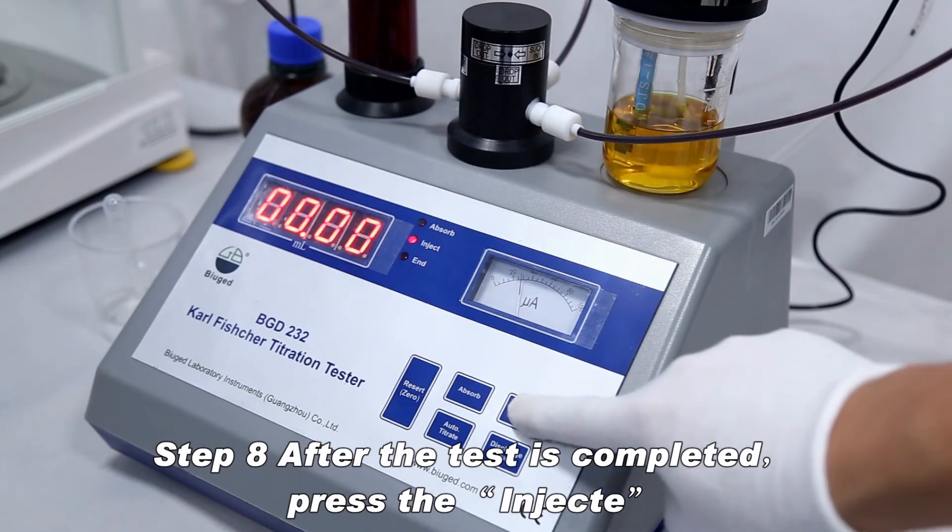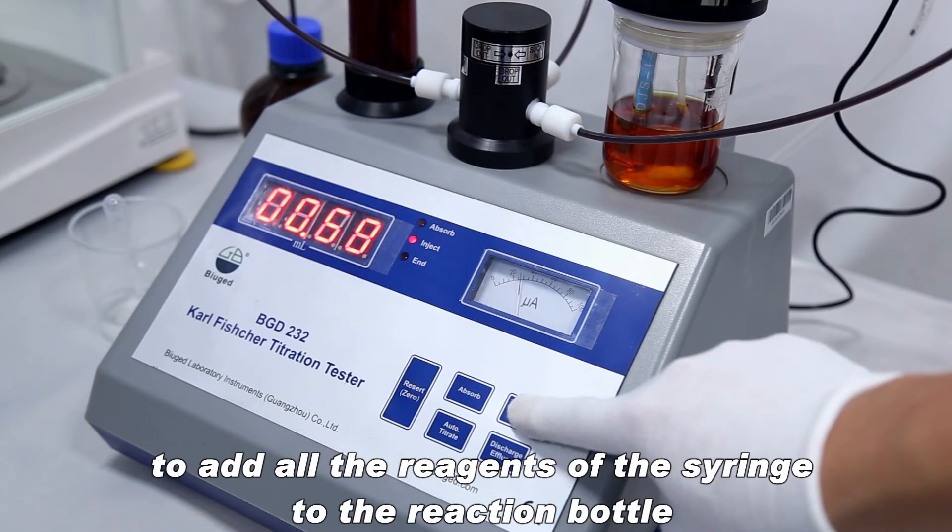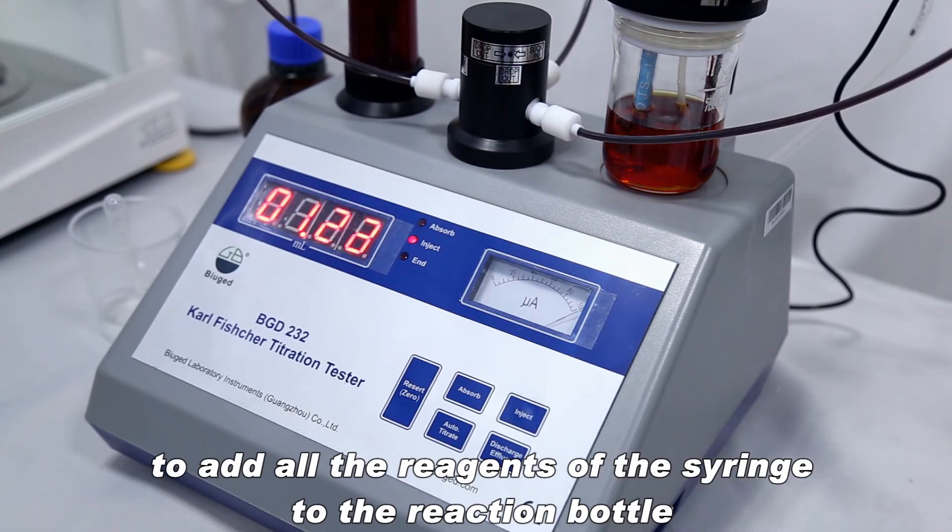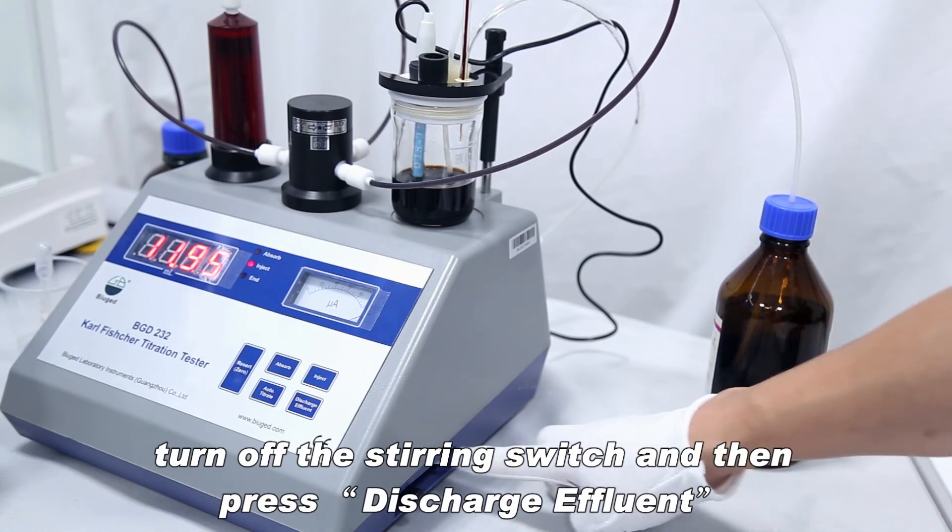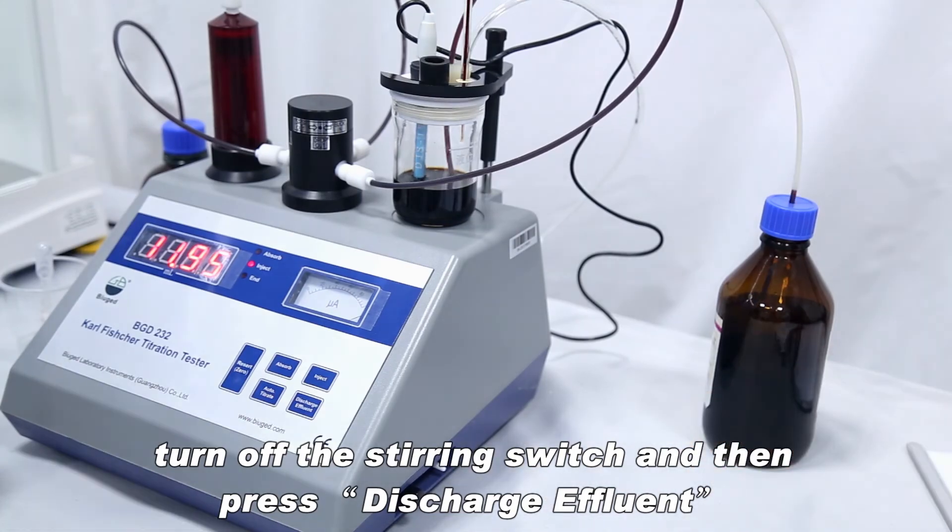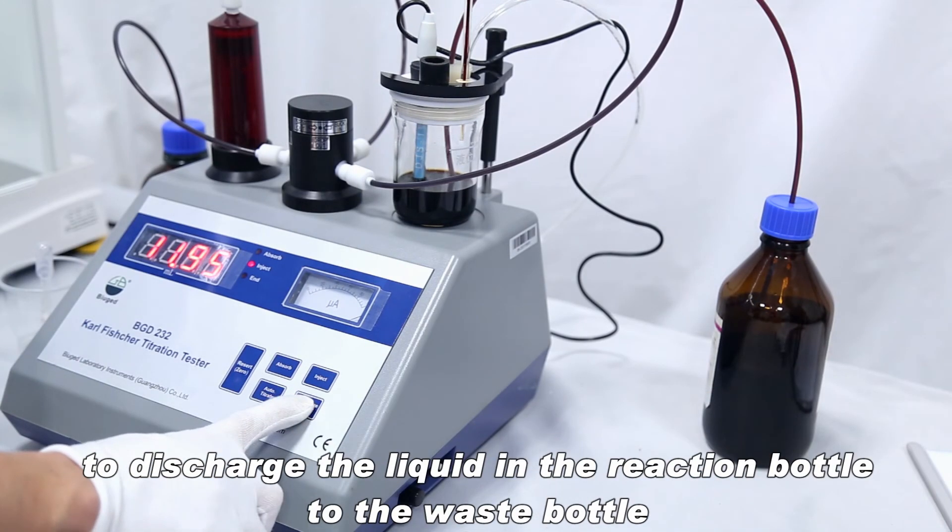After the test is completed, press the inject to add all the reagents of the syringe to the reaction bottle. Turn up the stirring switch and then press discharge effluent to discharge the liquid in the reaction bottle to the waste bottle.